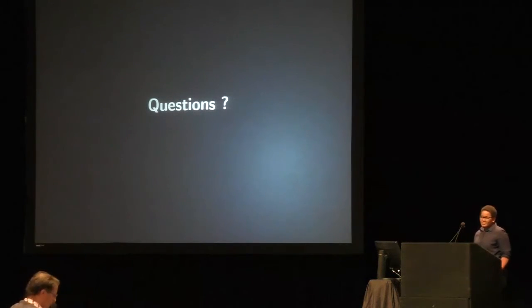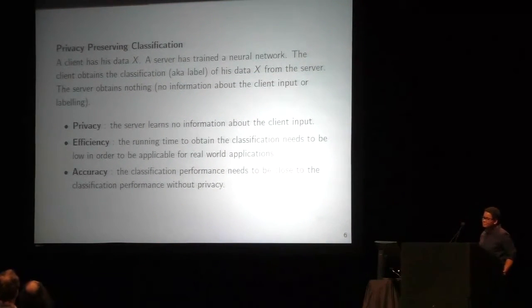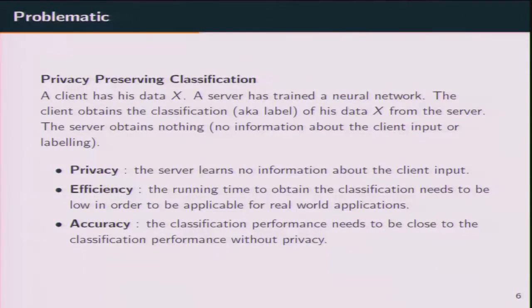Questioner: Thanks for your talk. On slide six — you have your list of things you need to satisfy, and you have privacy in one direction but not the other. It's tricky to define privacy in the other direction. You have no requirement that the client doesn't learn the model — so a trivial solution would be just to send the classifier to the client. If the client is allowed to give data and get classifications back, the client can learn the model itself through adaptive queries. So what actually is the privacy requirement in that direction?